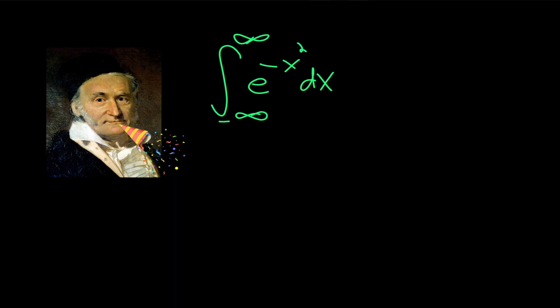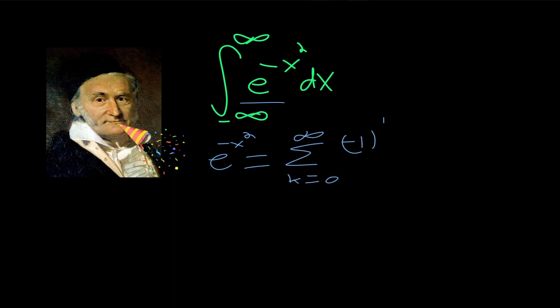The method we have for this year is going to be expanding out the e to the minus x squared term in terms of its power series, and then we're just going to evaluate the power series to get our final answer. We know that e to the minus x squared equals the sum from k equals 0 to infinity of negative 1 to the k times x to the 2k over k factorial. This follows from the basic series for e to the x that you learned in calculus — you just replace x with minus x squared.